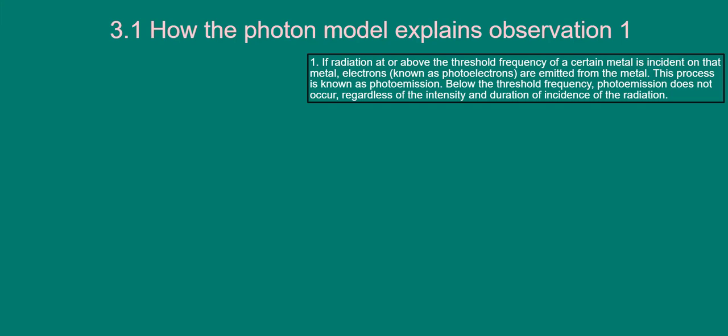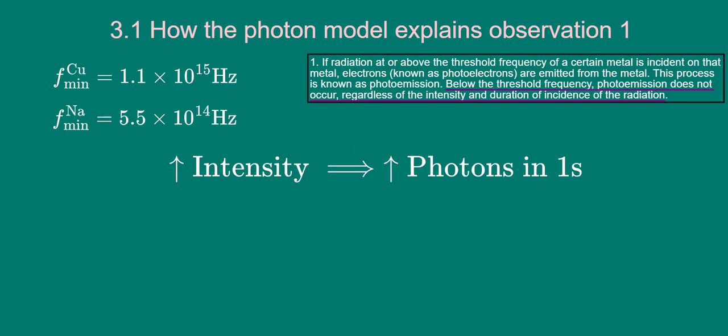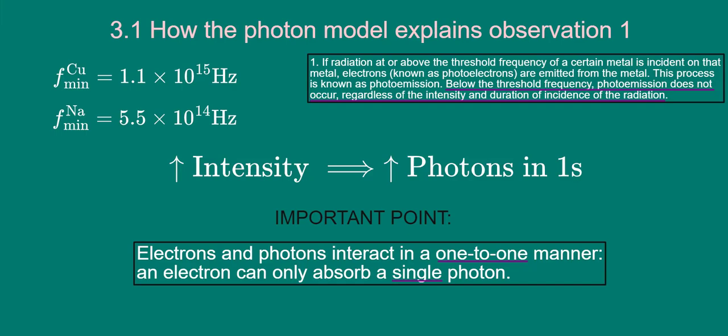In the previous video of the playlist, we saw that the threshold frequencies of copper and sodium were 1.1 times 10 to the 15 and 5.5 times 10 to the 14 hertz. Below these frequencies, we observed that photo emission didn't occur, irrespective of the intensity and duration of the radiation. Why is that? Recall from the previous video that an increase in intensity simply means more light energy arriving per second onto a metal plate. In the photon model, increasing intensity thus implies proportionally more photons arriving per second. So you might think that if there are more photons arriving, then surely there's more energy available for electrons to gain and eventually escape the metal. A key point to note is that electrons and photons interact in a one-to-one manner. An electron can only absorb a single photon. So even if there are 10 times as many photons arriving per second than before, if the frequency is below the threshold, each photon has too little energy to transfer to an electron to allow it to escape.